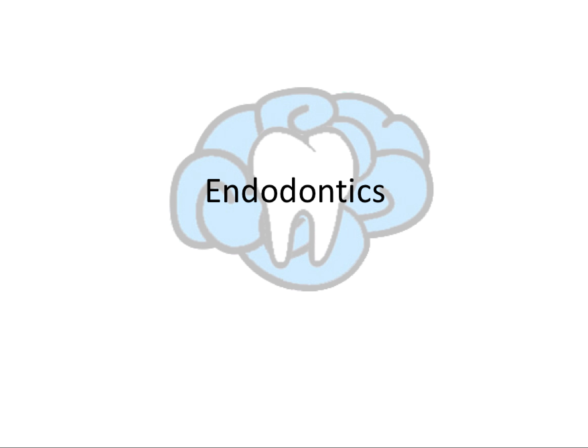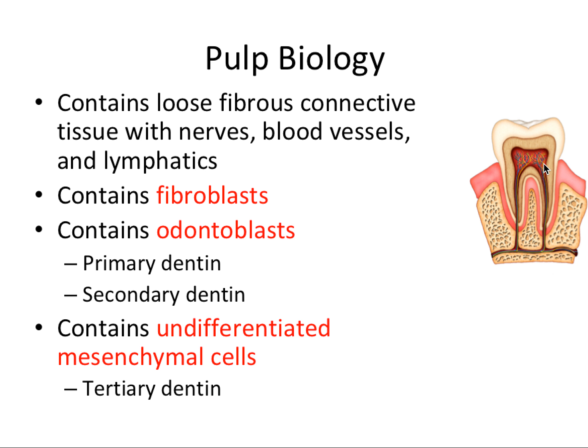First, we're going to go over the biology of the dental pulp, because much of endodontics is focused on pulpal health, since endodontics literally translates to the knowledge of what's within teeth. The pulp is the innermost part of the tooth, and it's generally very soft and vascular. So let's talk about what specifically is contained within this tissue.